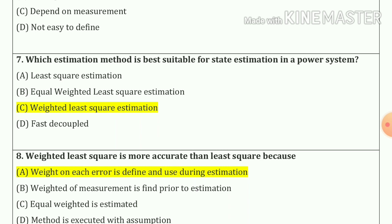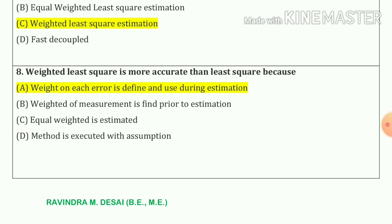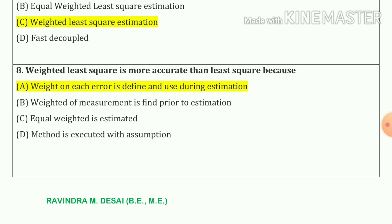Question number 7: Which estimation method is best suitable for state estimation in a power system? So our answer is option number c — weighted least square estimation. Question number 8: Weighted least square estimation is more accurate than least square because the weight on each error is defined and used during estimation. Answer is option number a.